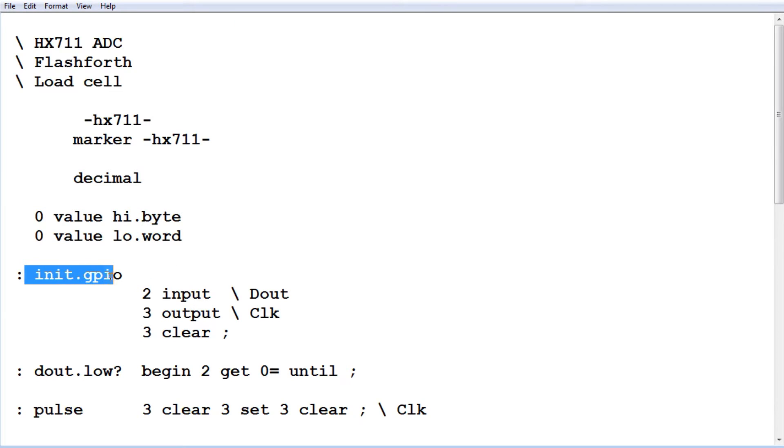The next word is init.gpio, so this is where we initialize pin 2 as an input, that's connected to the D out, and pin 3 will be configured as an output and that's connected to the clock of the HX711.